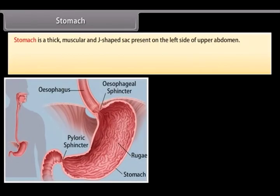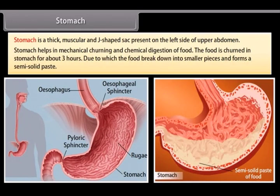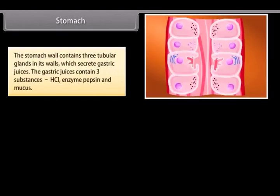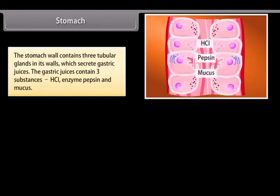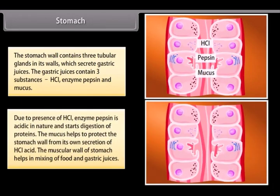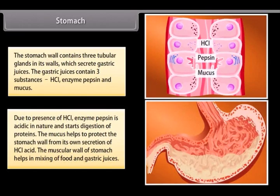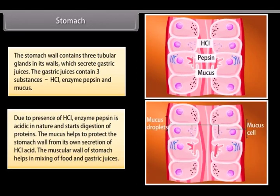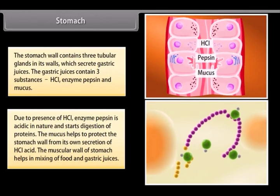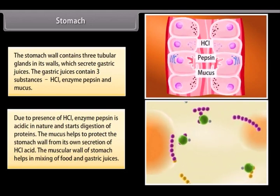Stomach is a thick muscular, J-shaped sac present on the left side of the upper abdomen. It helps in mechanical churning and chemical digestion of food. The food is churned in the stomach for about three hours, due to which the food breaks down into smaller pieces and forms a semi-solid paste. The stomach wall contains tubular glands which secrete gastric juices containing HCl, enzyme pepsin and mucus. Pepsin in the presence of HCl starts digestion of proteins, while mucus protects the stomach wall from HCl acid.